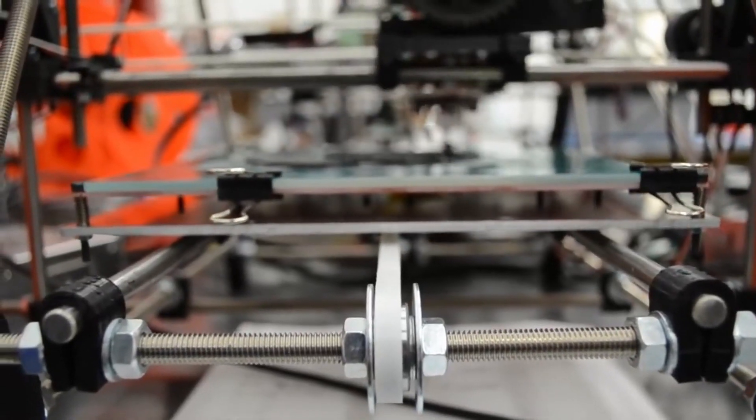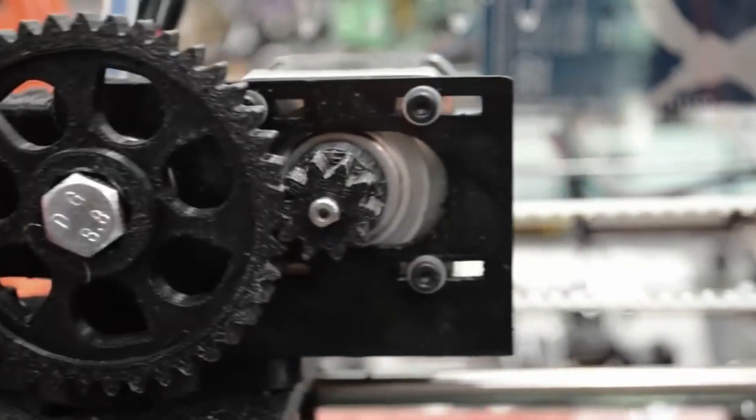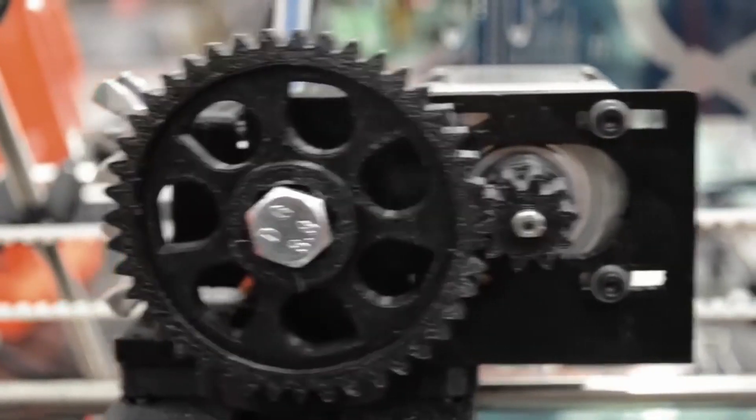3D printers are able to print in plastic, concrete, metal, and even animal cells. But most printers will be designed to use only one type of material.